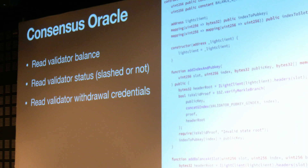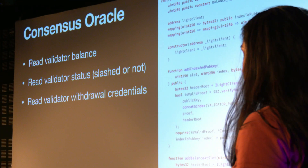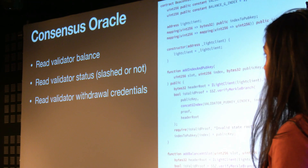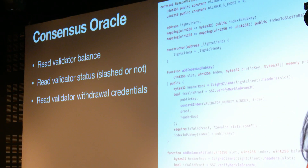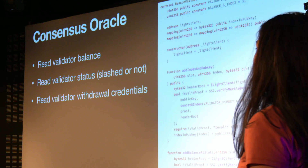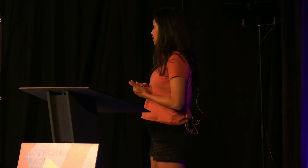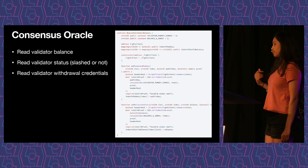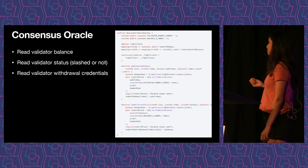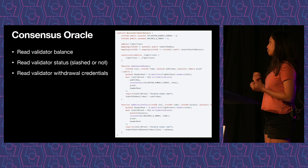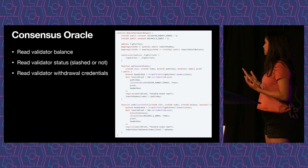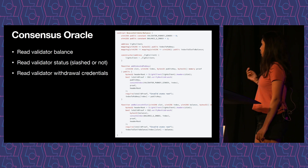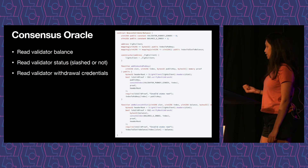This is an example of the consensus layer oracle. A few users use the consensus oracle to read validator balances, validator status, or validator withdrawal credentials. This one is a little more complicated because the validator information involves proving different fields — it's not just simple bytes. This is an example of using our light client to get the beacon validator balance for a particular validator.